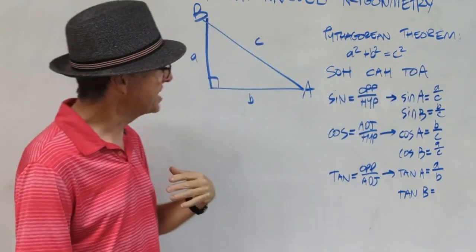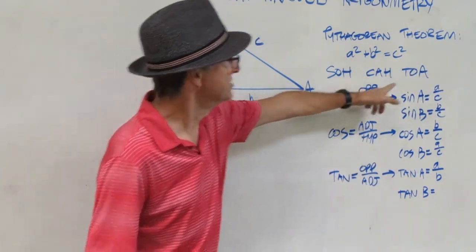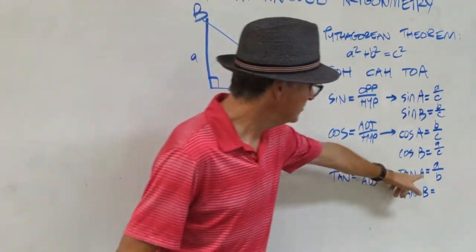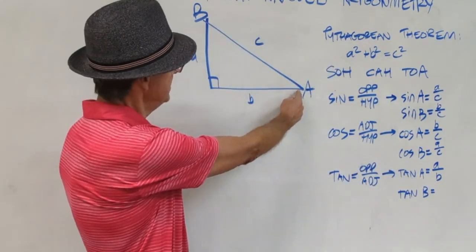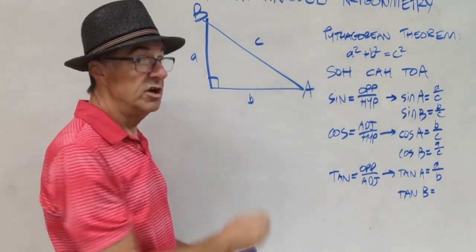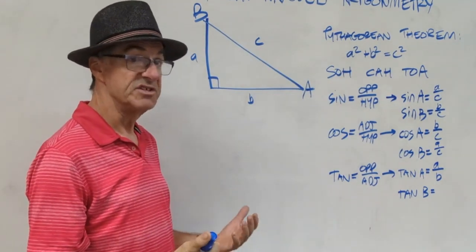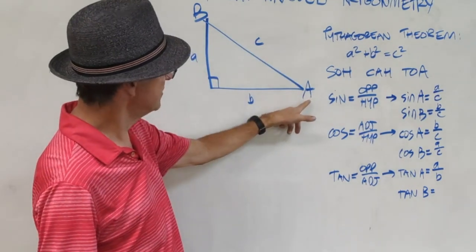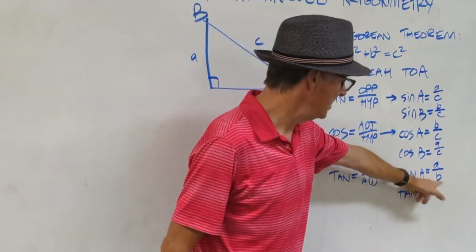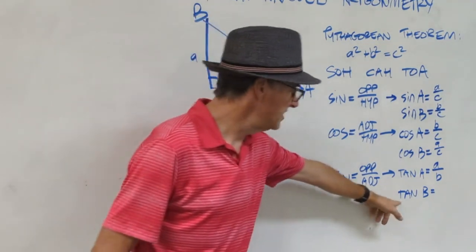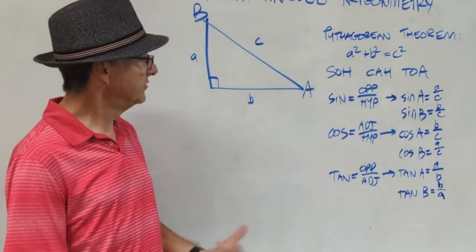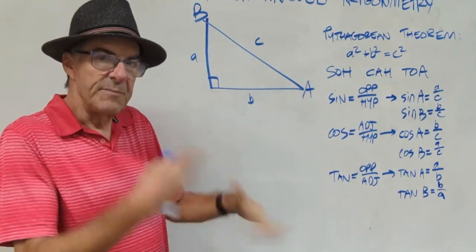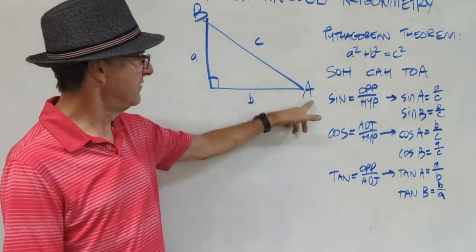Let's take a look at tangent. Tangent is opposite over adjacent — that's the TOA, T-O-A. Tangent of angle A is going to be opposite over adjacent. Notice there's no hypotenuse in tangent — it's just the opposite and adjacent sides. So tangent of A is just A over B. Pause the video and write down tangent of angle B. Tangent of B is just B over A — it's just flipping the fraction from tangent of angle A.